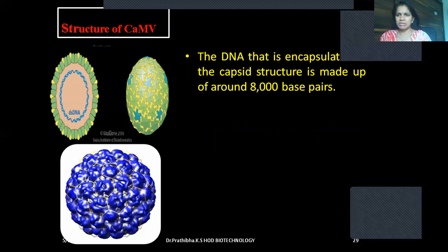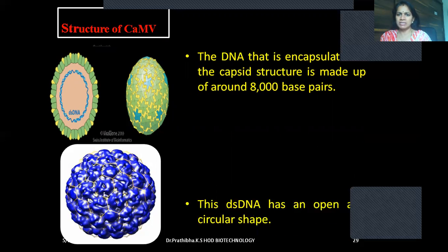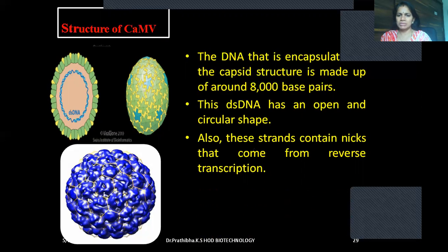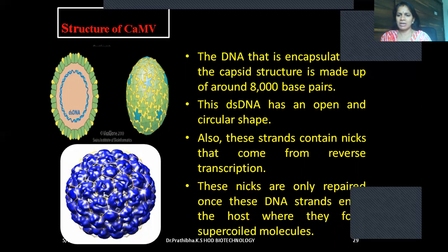The DNA encapsulated in the capsid structure is made up of around 8,000 base pairs. As this is double-stranded DNA, we use the terminology base pairs; when single-stranded, we use the word bases. This double-stranded DNA has an open and circular shape. These strands contain nicks that come from reverse transcription. These nicks are only repaired once the DNA strands enter the host, where they form super-coiled molecules.